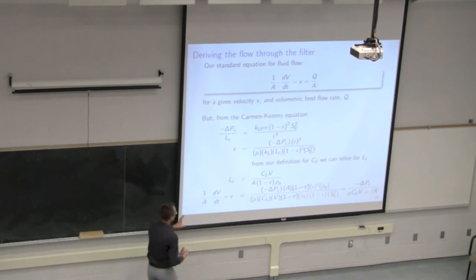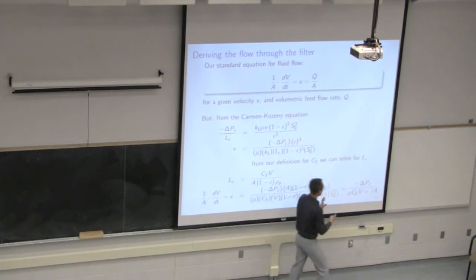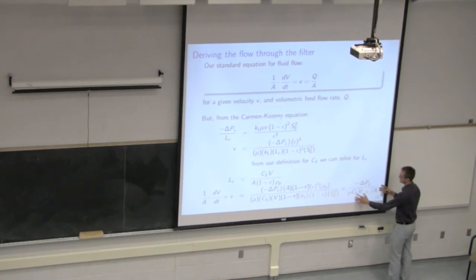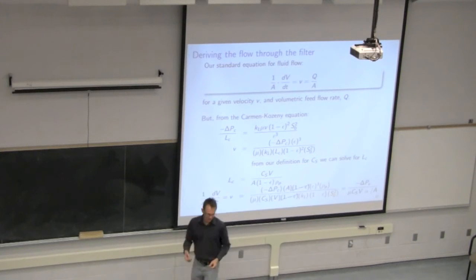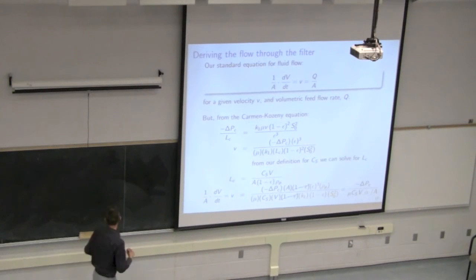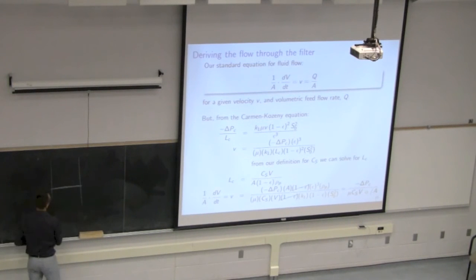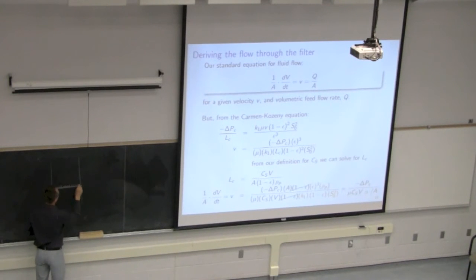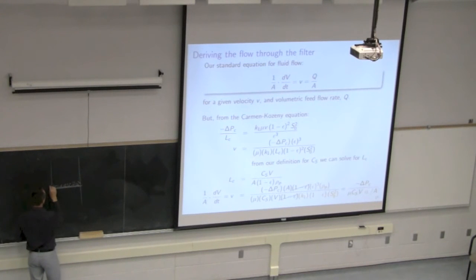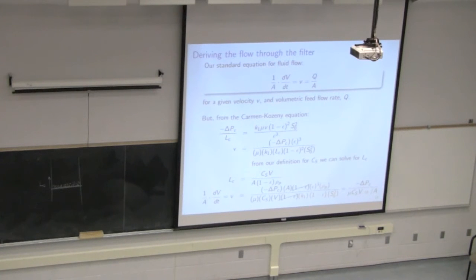Things that are easy to measure are on the left, things on the right are also easy to measure except for alpha. So we had the cake resistance RC as one of the resistances. Visualizing this system: we have our slurry coming down onto a very open, porous plate, and particles start to settle and form a thin layer of cake, which builds up sequentially over time. LC grows as the batch progresses.